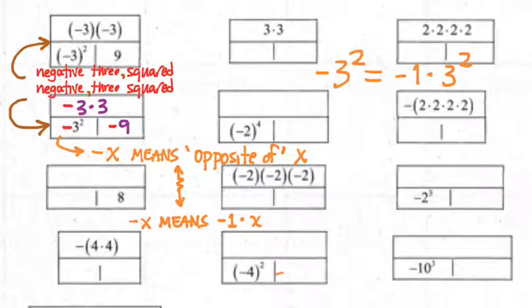Because what has to happen first if I'm evaluating this expression? The exponent. Because it has to happen before the multiplication. And so when that exponent here happens first, that gives me negative 1 times 9, and that gives me the negative 9.